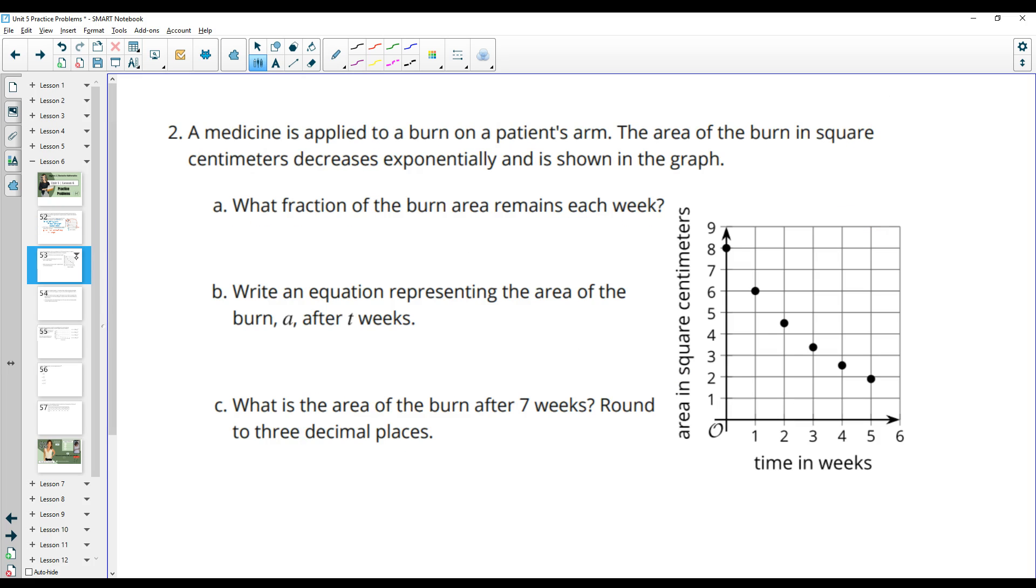Number two, a medicine is applied to a burn on a patient's arm. The area of the burn in square centimeters decreases exponentially and is shown in the graph. What fraction of the burn remains each week? So this is where we want to take the new measurement divided by the original measurement, which I just call the OG measurement.